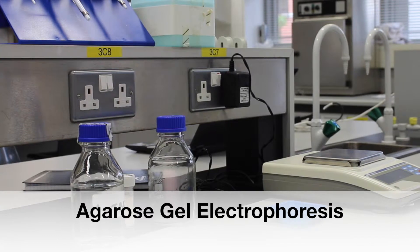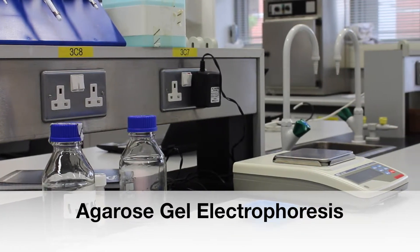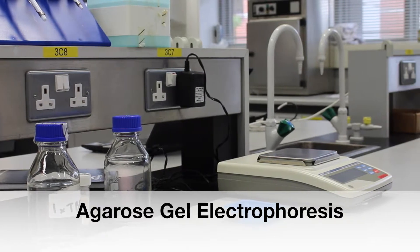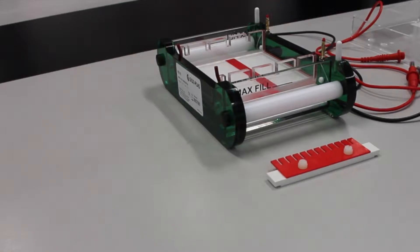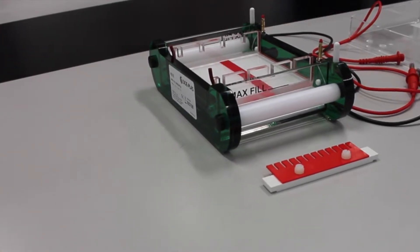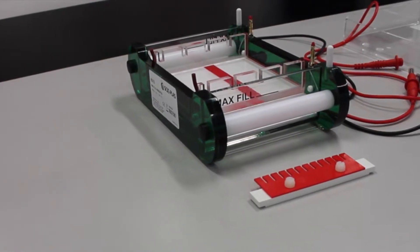This video is part of the iGEM Academy series, a beginner's guide. This tutorial explains how to prepare and carry out agarose gel electrophoresis. This popular technique is used to visualize and identify DNA fragments or proteins by separating them according to their size.